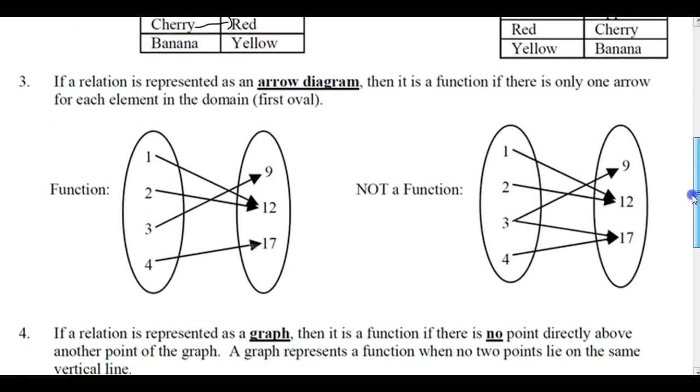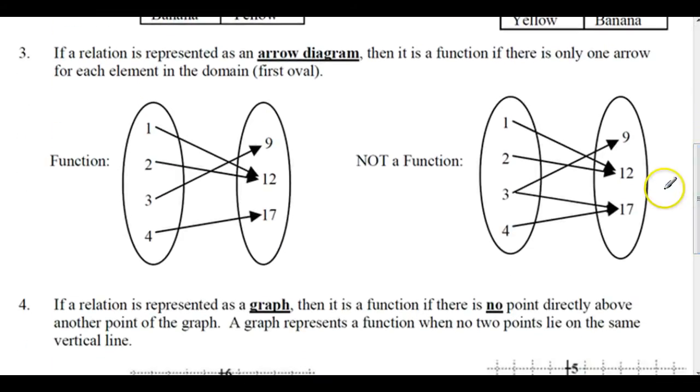So let's look at it in the arrow diagram. Arrow diagram, it's a function if there's only one arrow for each element. So there's only one line coming off of each domain element. So 1 goes to 12, and so does 2. That's fine,